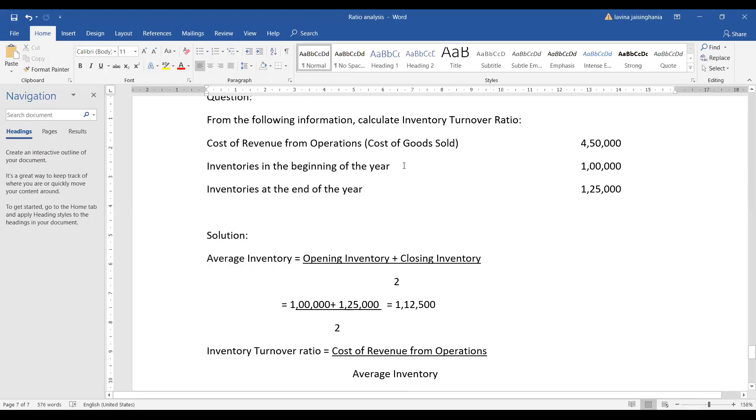Here I am having a sum related to this. It is saying from the following information calculate inventory ratio. We have to calculate inventory ratio. Cost of revenue from operation is given, inventory in the beginning of the year and in the ending of the year is given. So our formula is cost of revenue from operation divided by average inventory. Now what is average inventory? Average inventory is opening inventories plus closing inventories divided by 2.